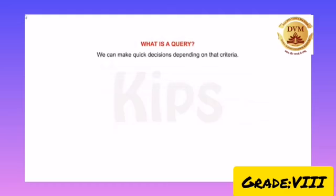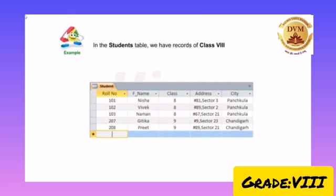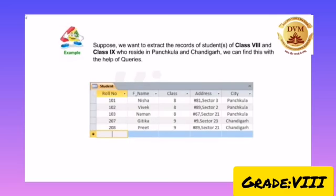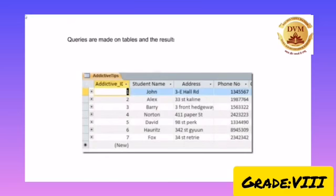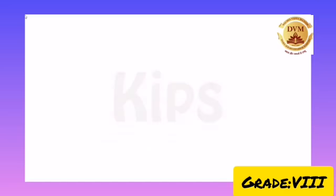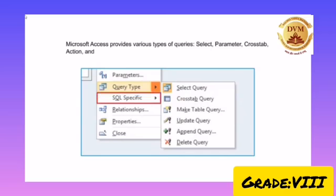Let us understand the concept of queries with the help of a given example. In the student table, we have records of class 8 as well as class 9 students. Suppose we want to extract the records of students of class 8 and class 9 who reside in a particular place. We can find this with the help of queries. Queries are made on the table and the result is displayed in the form of a table, i.e., in rows and columns with a set of records that match the given condition. Microsoft Access provides various types of queries: Select, Parameter, Crosstab, Action, and SQL (Structured Query Language) Query.